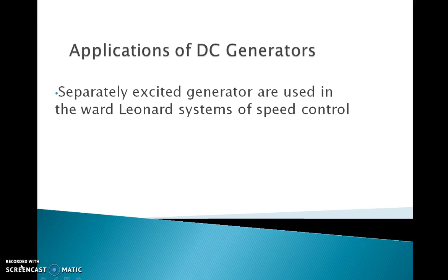Now I am going to discuss the applications of DC generators. A DC generator is a machine which converts mechanical power into electrical power. The energy conversion is based on the principle of production of dynamically induced EMF — whenever a conductor cuts the magnetic flux, a dynamically induced EMF is produced according to Faraday's laws of electromagnetic induction.